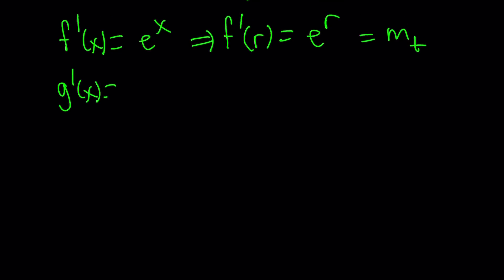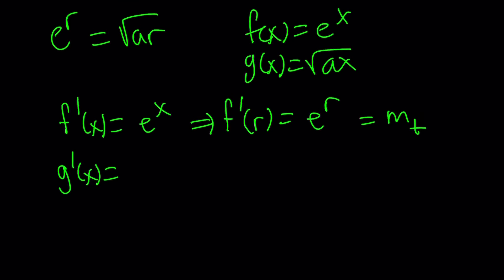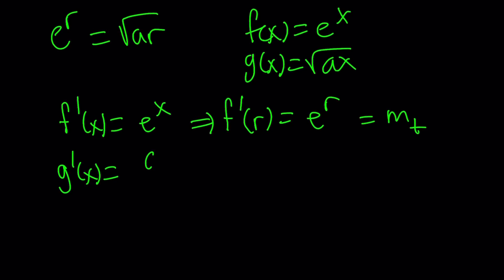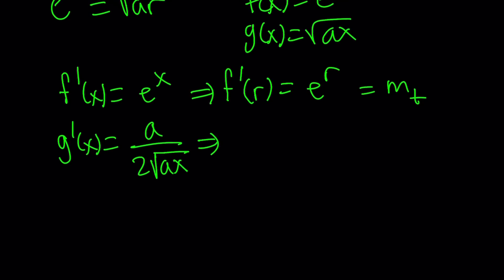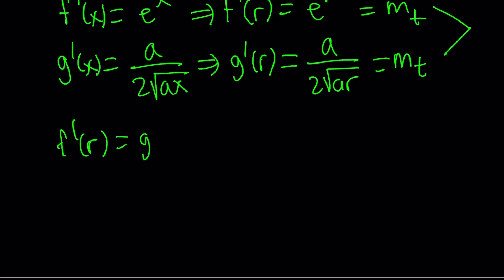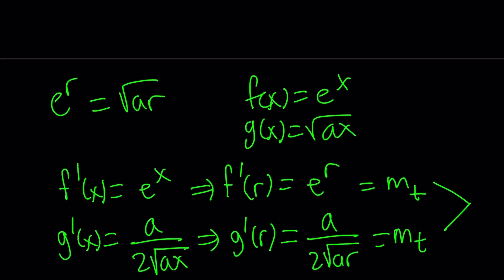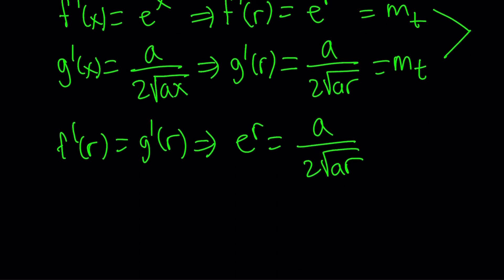For g, the derivative is, how do you differentiate square root of a function? You differentiate the inside, which is a, and then just divide by two times the same function. Just a rule that comes from chain rule. And if you replace x with r, g prime at r is going to be a over two times the square root of ar. That's also the slope of the tangent, but these two are the same. Therefore, f prime of r equals g prime of r. And this implies e to the r equals a over two times square root of ar. So we have two equations now.